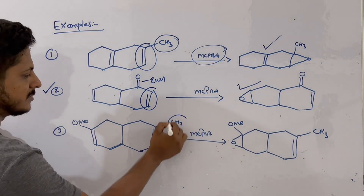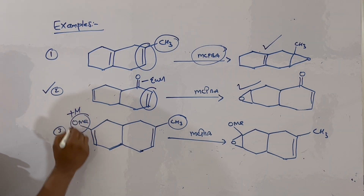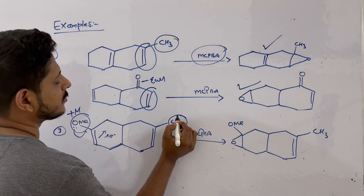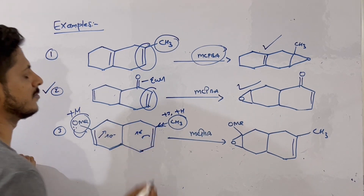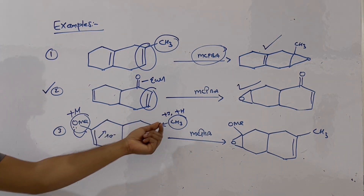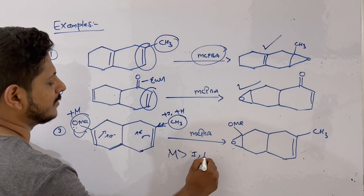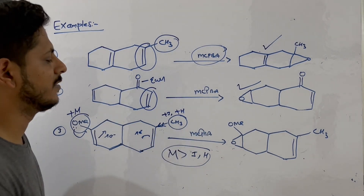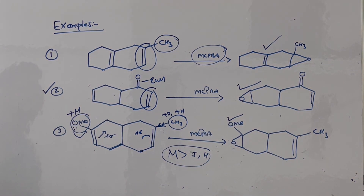In the third case, you have two alkenes — one attached to CH₃ and another to OMe. OMe exerts a +M (mesomeric) effect, increasing the electron density of that alkene. CH₃ is a +I group and also shows hyperconjugation, increasing electron density too. But among +I effect/hyperconjugation and mesomeric effect, the mesomeric effect is always dominant from general organic chemistry. So the OMe-attached alkene will be richer, and mCPBA will react on that alkene. This third example was from a previous year exam.